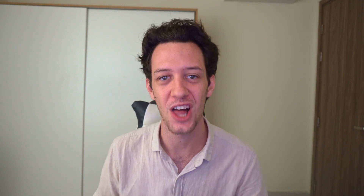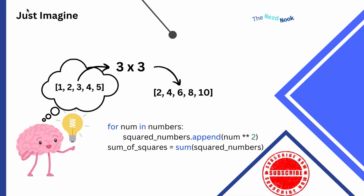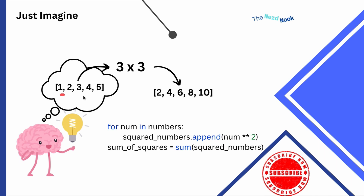Let's jump over to the slides. Imagine you have a list, and you want to create another list that takes each element in the list — one, two, three — squares the element, and appends the new value to a new list. This is a completely basic Python operation.